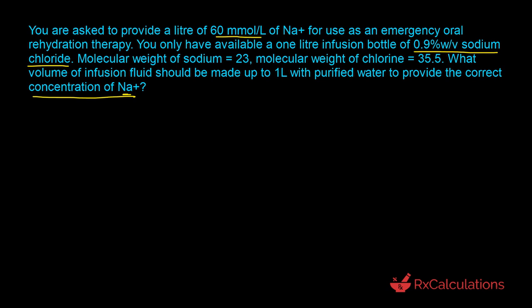The way that works is to go back to stoichiometry. When you take sodium chloride (NaCl) and put it in an aqueous environment, it dissociates into the sodium cation and the chloride anion. We are interested in the molar ratio: if you put in one mole of sodium chloride, you end up with one mole of sodium cation and one mole of chloride anion.